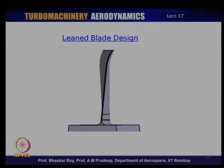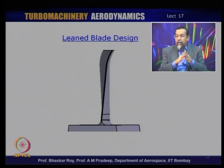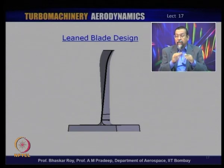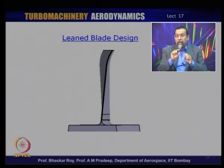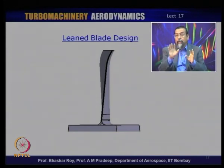These blades are called leaned because the lean from radial stacking goes in the circumferential direction: sweep shifts aerofoils forward or backward, whereas lean shifts aerofoils circumferentially from the radial stacking either to one side or the other, creating the lean. Lean blade stacking is another aspect of modern blade design in addition to, or as an alternate to, sweep. Sweep and lean may appear together or separately — many modern designs actually have both lean and sweep together.